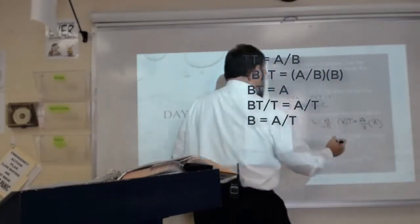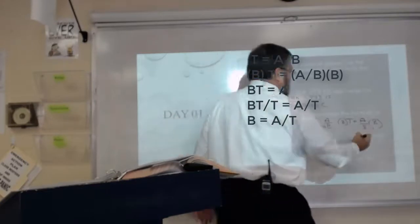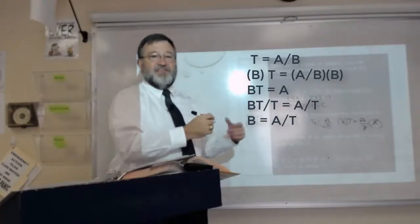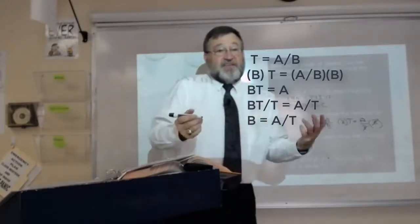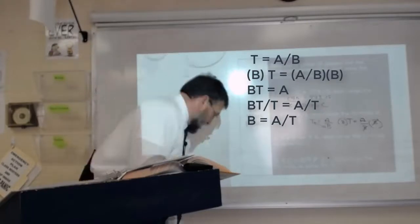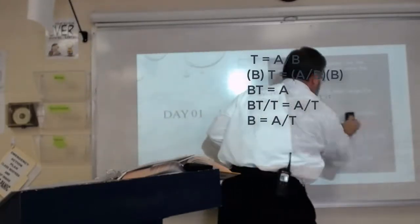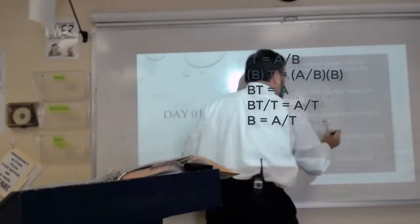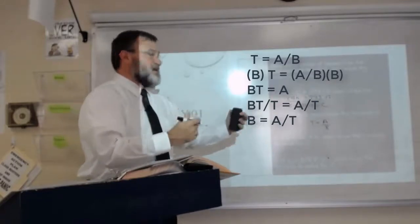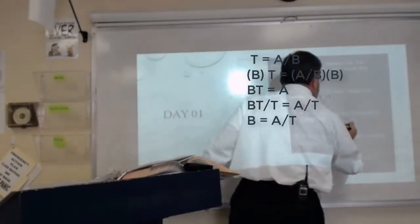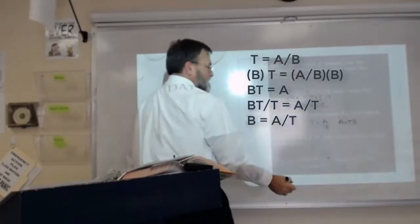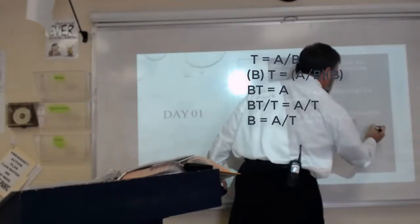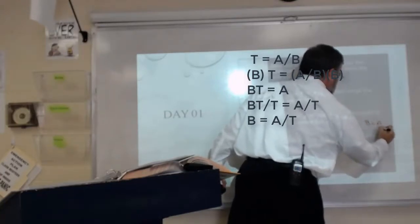B cancels B, and I'm left with BT equals A. Then divide both sides by T. That'd be one way to do it. There's multiple different ways you could do this solution. B is A over T.